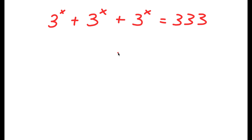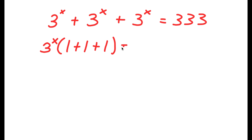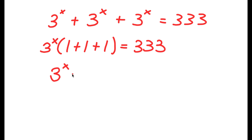In this problem, I have 3 to the power of x plus 3 to the power of x plus 3 to the power of x is equal to 333. The first thing I'm going to do is factor out 3 to the power of x from my left-hand side. So now I have 3 to the power of x times 1 plus 1 plus 1 is equal to 333. Solving what's in the parentheses, 1 plus 1 plus 1 equals 3, so I get 3 to the power of x times 3 is equal to 333.